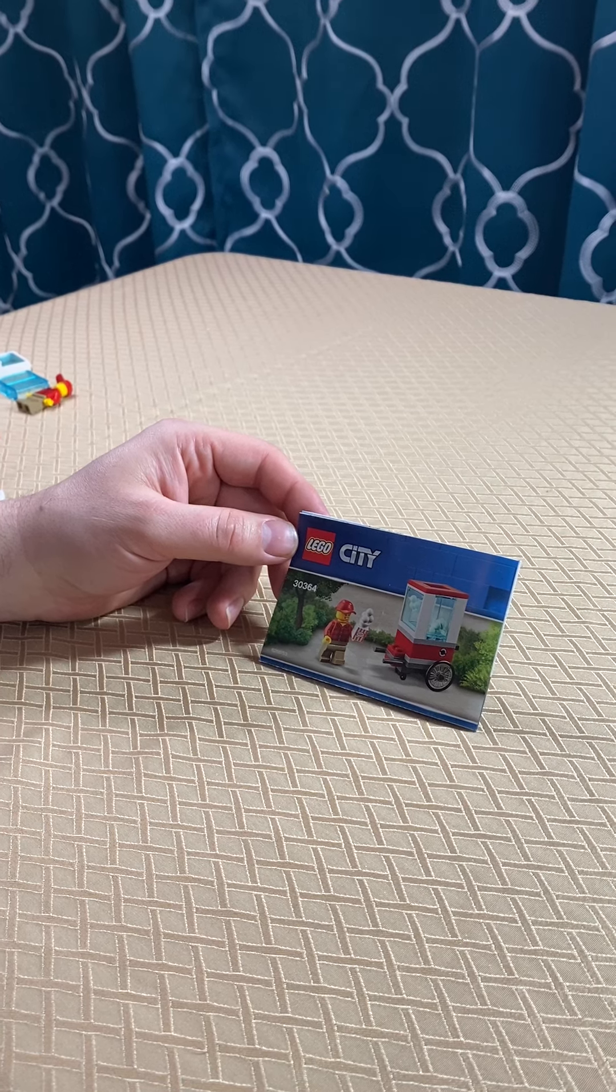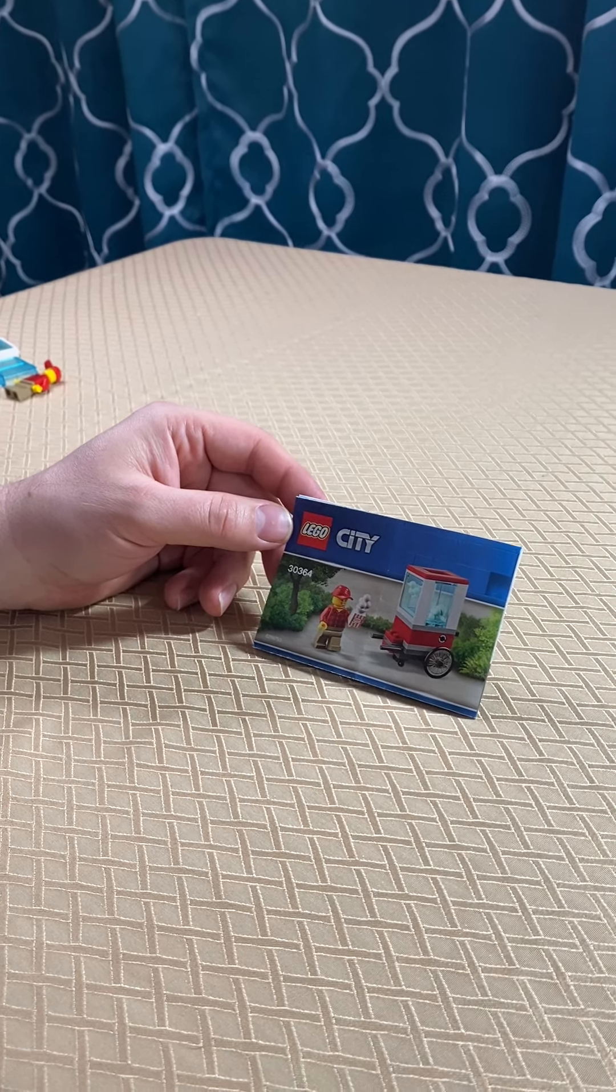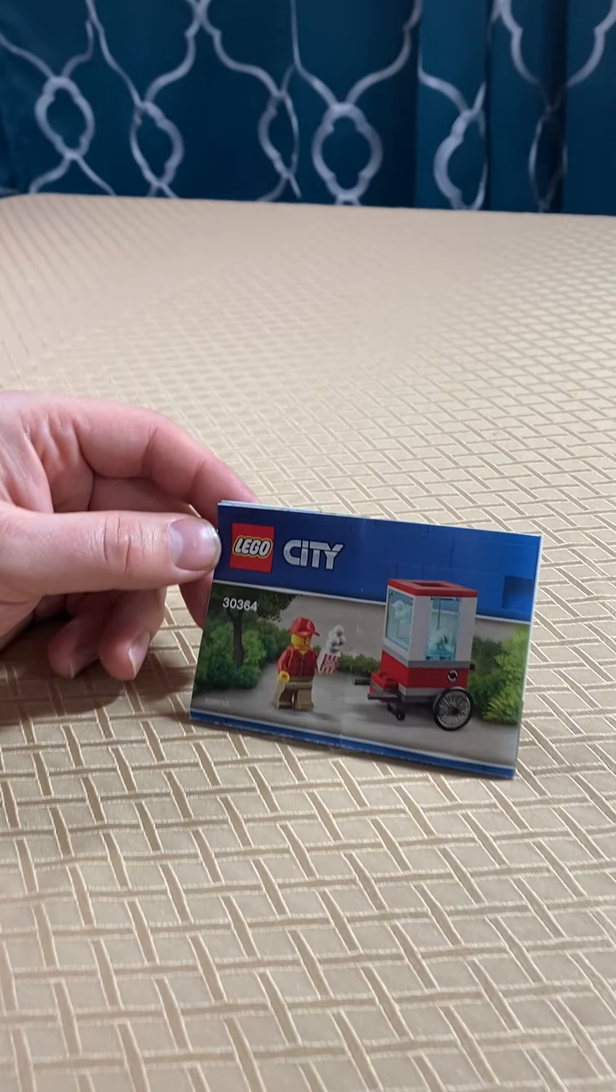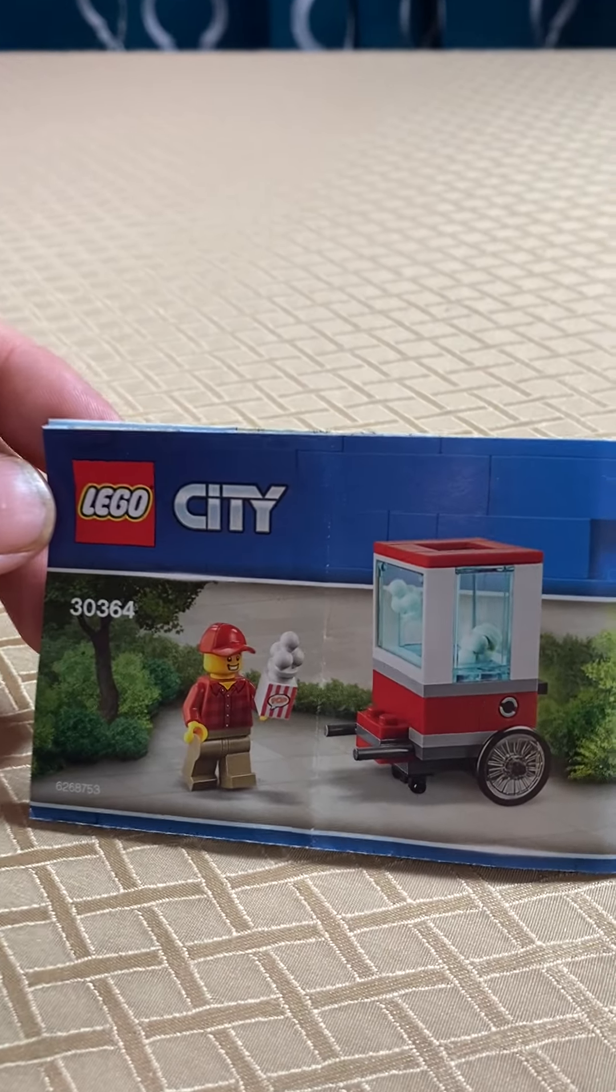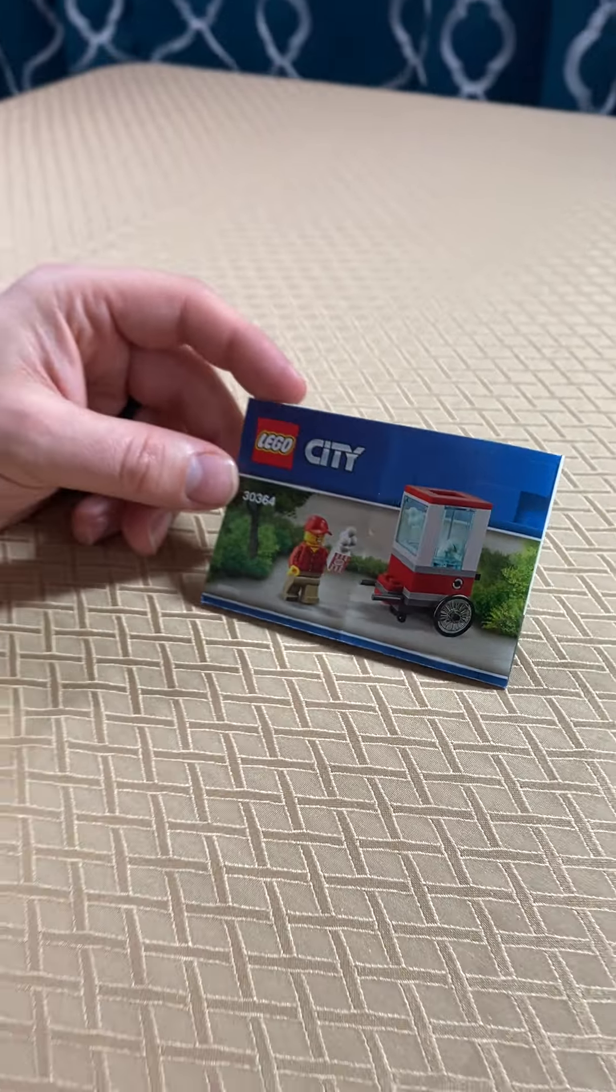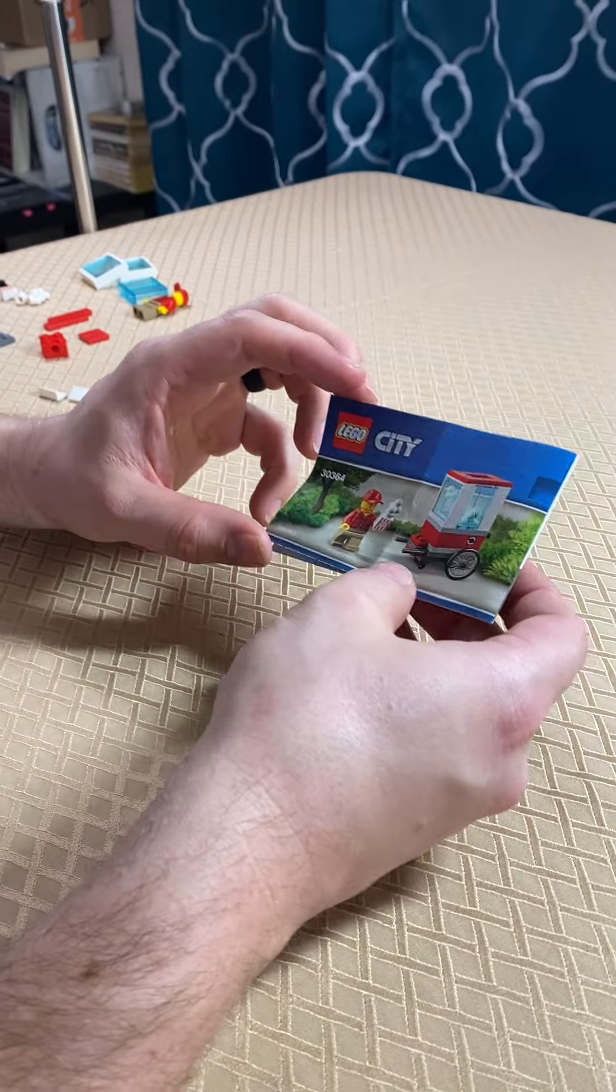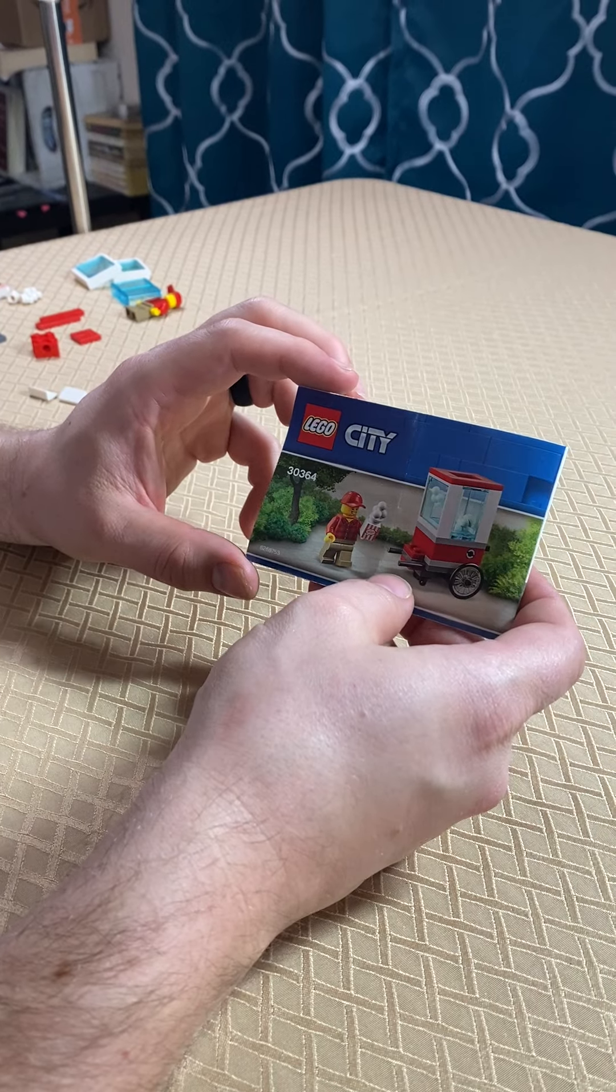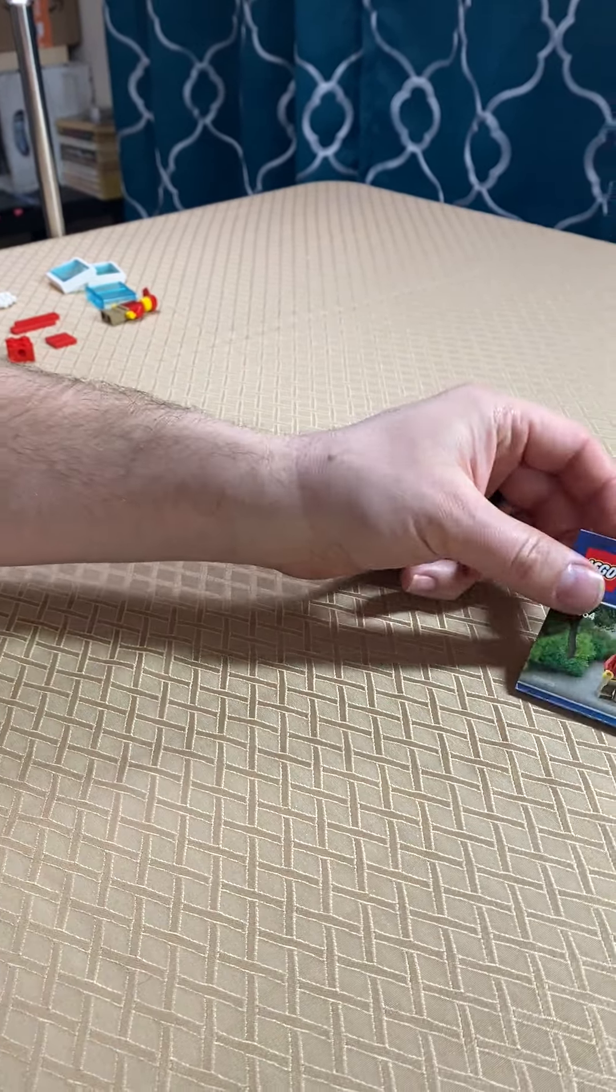Welcome back to LEGO Holds My Life Together. Today I wanted to go through LEGO City Set 30364. This is a set that was given to us by LEGO for ordering enough LEGO off their website. They do that occasionally and it's just a fun little set to have in your LEGO City. You've got a man on the corner selling popcorn.